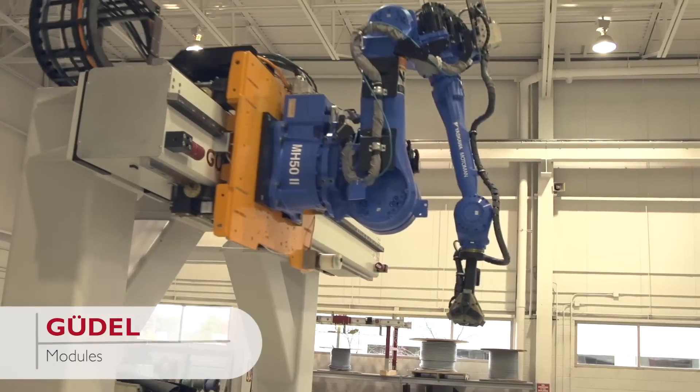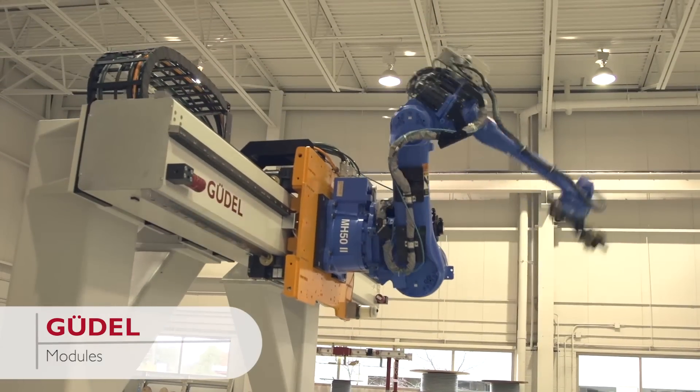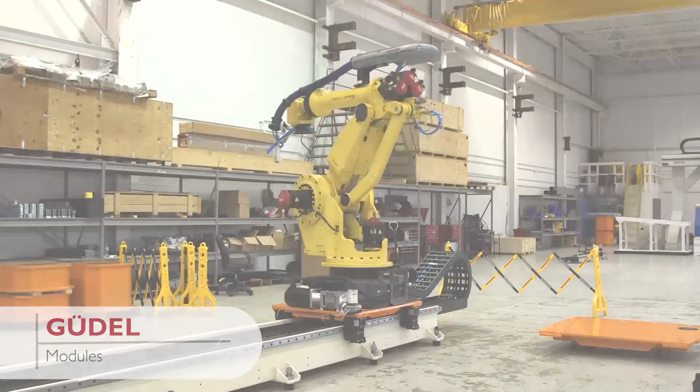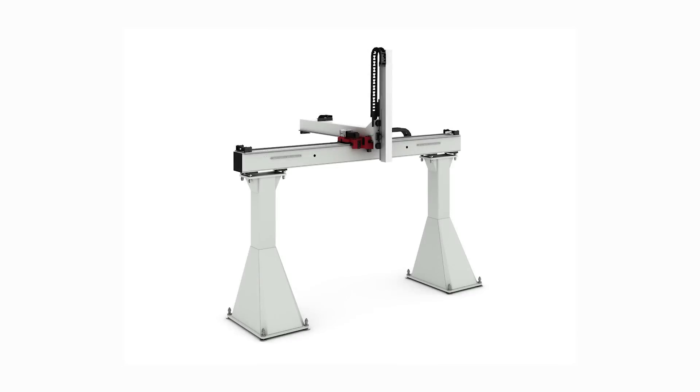Then there are Güdel modules, such as gantry robots and track motion units for floor and overhead mounting of robots and automation. Modules are standard products pre-engineered in a range of sizes and configurations from the company's own components.